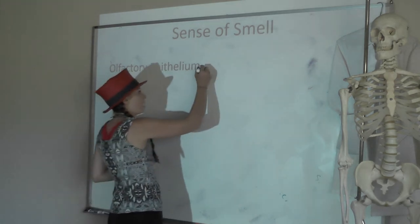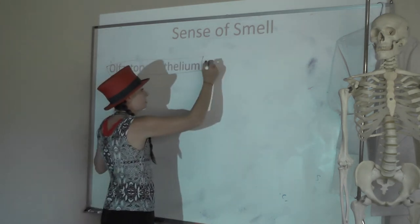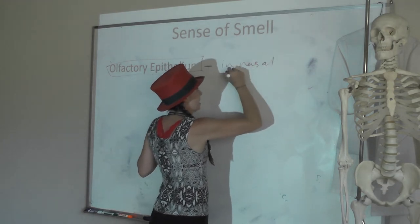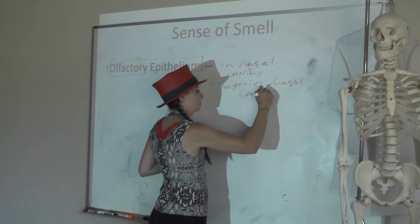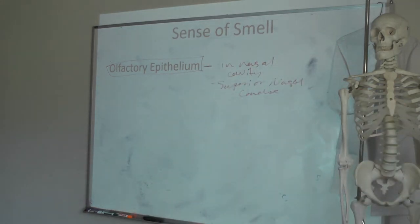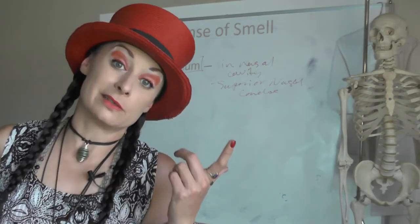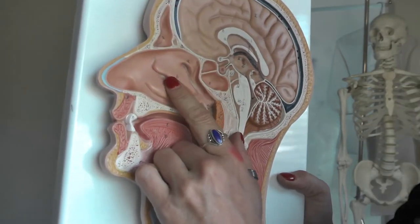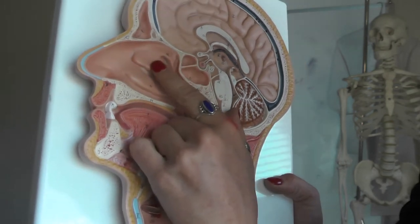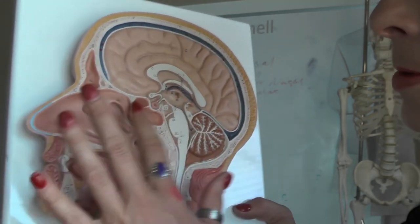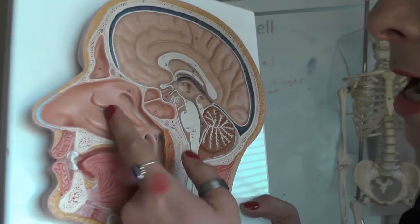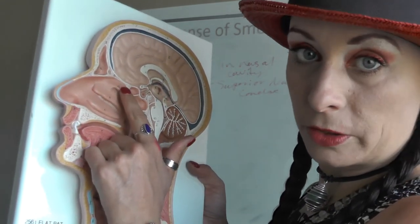The olfactory epithelium is the special sense organ for smell. It's located in the nasal cavity at the region of the superior nasal concha. Inside your nasal cavity you have bony ridges called nasal conchae, covered in epithelium with mucus to trap debris and odorants. Anytime you're really trying to catch a whiff of something, you sniff it all the way up to the superior nasal concha, and that's where the olfactory epithelium is located.